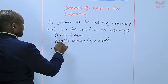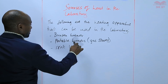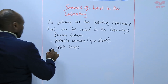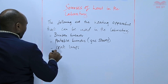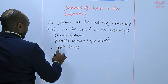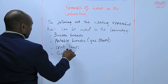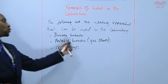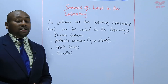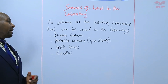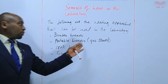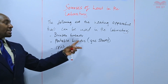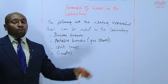We also have spirit lamps — lamps that use spirit — which can also be used for heating. We can also use candles, although they do not produce much heat. Basically, the first two are the most commonly used heating apparatus, especially the Bunsen burner. The portable burners have more or less the same setup as the Bunsen burner, but they carry their own gas cylinder and therefore they are portable from one point to another.